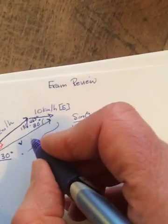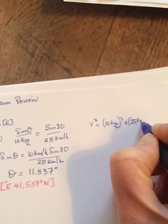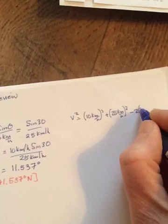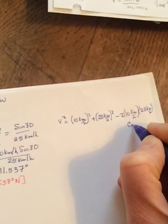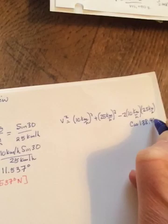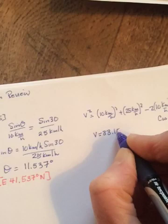So looking for v squared, it'll be equal to a squared, which is 10 kilometers per hour squared, plus b squared, 25 kilometers per hour squared, and then minus 2ab, 10 kilometers per hour times 25 kilometers per hour, times the cos of the angle 138.463. I got that by adding up the other two inside and taking them away from 180. And so when you do this, you get a v of 33.155 kilometers per hour.